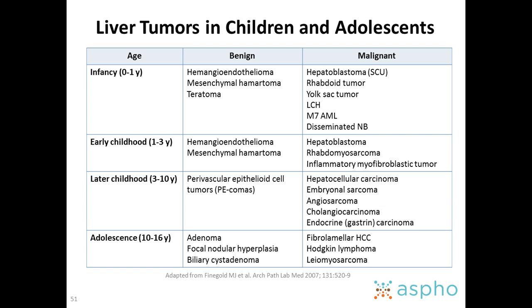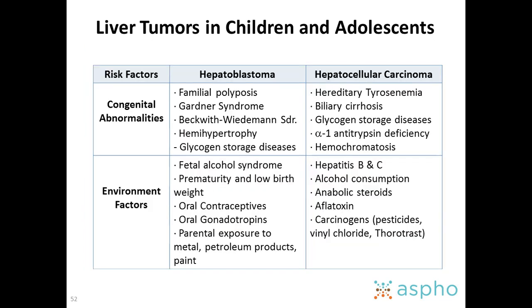In adolescence, think about adenomas, focal nodular hyperplasia, and biliary tumors. The malignant tumors are almost always hepatocellular carcinomas. The fibrolamellar variant is the one you need to consider.